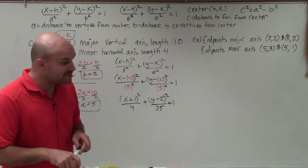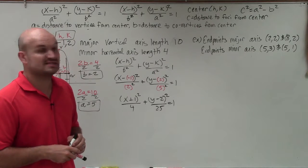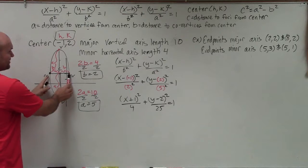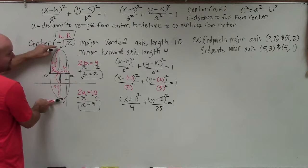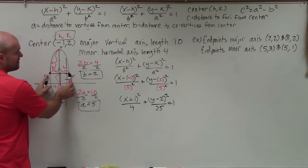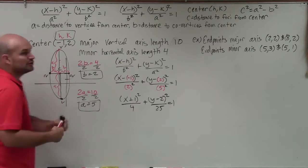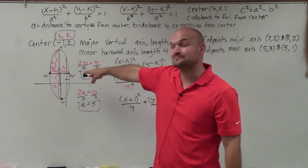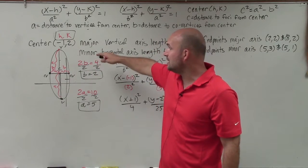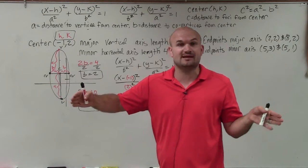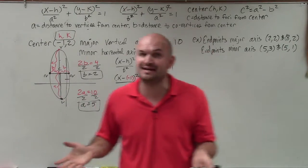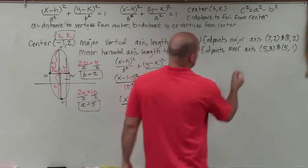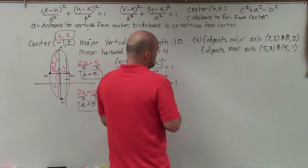Now let's move on to the next problem. We don't have any idea of where the center is. All we're given is the endpoints of the major axis and the endpoints of the minor axis. The endpoints of the major axis are our vertices, and the endpoints of the minor axis are our co-vertices. We just don't know what the center is or whether the ellipse has a vertical or horizontal major axis. The way I prefer to determine that is to plot the information.